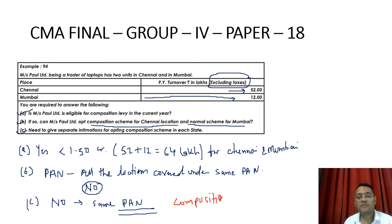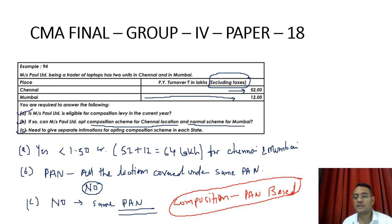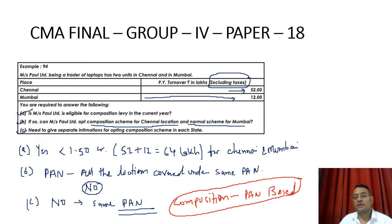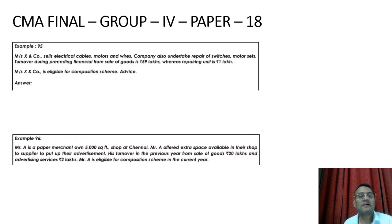The third question is whether Paul Limited needs to give separate intimations for opting the composition scheme in each state. The answer is no. A taxpayer does not need to give a separate intimation for each state. The intimation for opting the composition scheme given in any one state will be treated as intimation given in respect of all units registered under the same PAN. The composition scheme is PAN-based, so all units under the same PAN must either all opt for it or not.